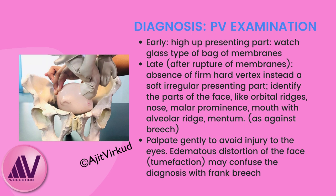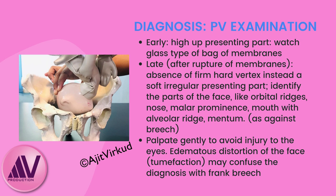On internal examination early in labor, presenting part is high up. A watch-glass type of bag of membranes may be felt because the presenting part does not fit the cervix well. The intrapartum diagnosis of face presentation is possible by vaginal examination in the late first or the second stage of labor. Palpation of the orbital ridge and orbits, saddle of the nose, mouth, and chin is diagnostic of face presentation. The fontanelles and sutures are not generally palpable. At diagnosis, nearly 60% of face presentations are mentum anterior, 26% are mentum posterior, and 15% are mentum transverse, and may be designated as left or right.